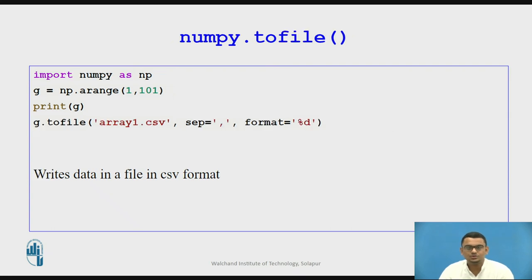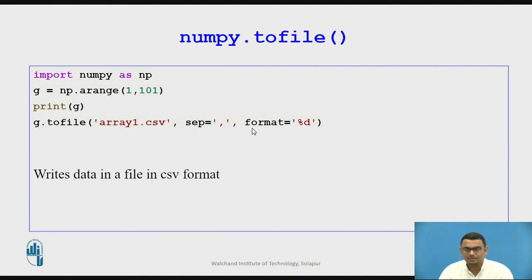Let us see how to use the tofile routine. Again, the data to be written ranges from 1 through 100, stored in array g. We call the tofile routine passing the filename array1.csv, the separator as a comma for comma-separated values, and the format as %d specifying integer type. This routine writes the data to the specified file in CSV format.